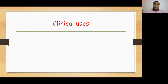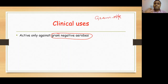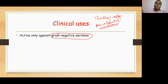Regarding clinical uses: unlike carbapenems, which are broad-spectrum antibiotics effective against a wide range of gram-positive and gram-negative bacteria including anaerobes, we have to remember that aztreonam is only effective against gram-negative aerobes. This means it will not be effective against gram-positive organisms, and it will not be effective against anaerobes. You must remember that aztreonam, being a monobactam, is only effective against gram-negative aerobes.